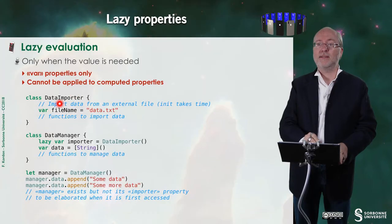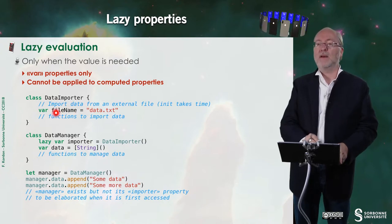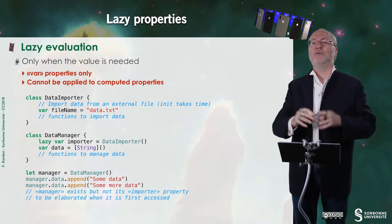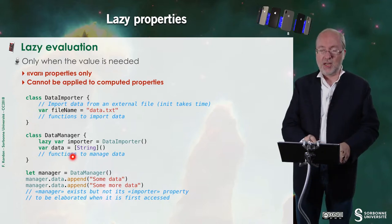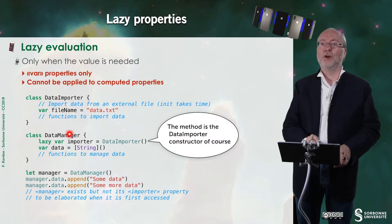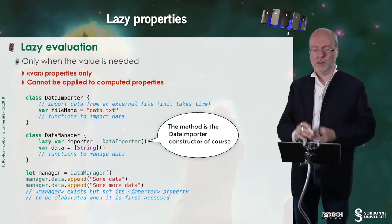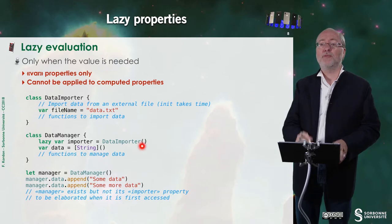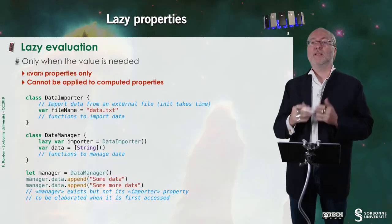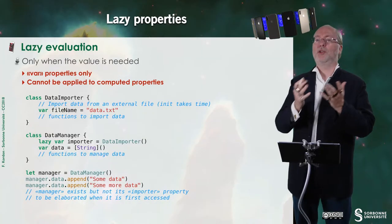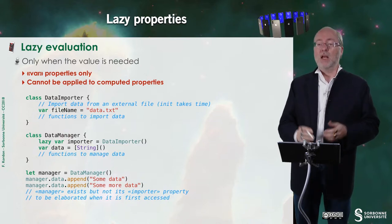Here you have a first class called DataImporter. And here I have a variable, filename, with a given value. And here I have another class, DataManager, with two internal variables. The first internal variable is data, which is a huge string. And here I have another variable, or property, or attribute, which is initialized by a function DataImporter. And I declare it to be lazy. It means that when I will elaborate an instance of DataManager, I will not elaborate importer immediately.